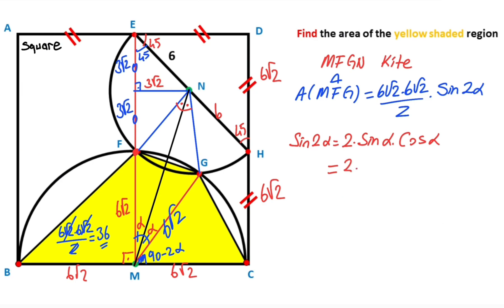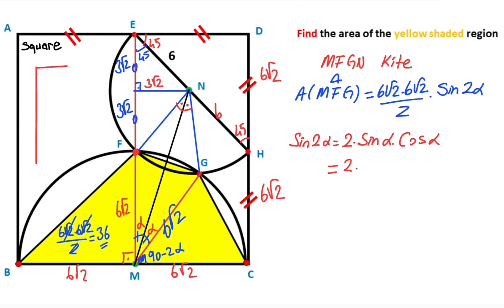You know that the expansion of sin(2α) equals 2 × sin(α) × cos(α). So sin(α) — if you focus on this triangle — here is 3√2 and this length is 9√2. Note that the ratio of these two sides equals 3.